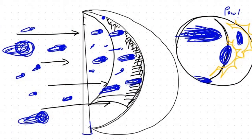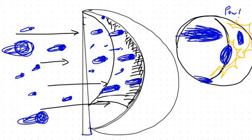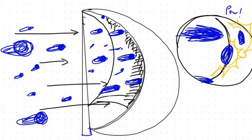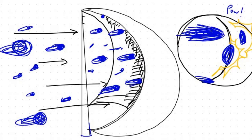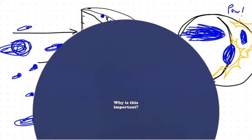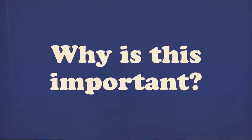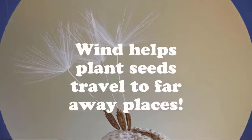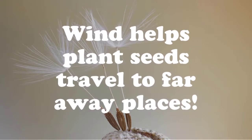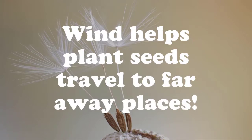If they all hit the sail, then it's possible that if it's strong enough, it can push whatever the sail is attached to forward. So we know wind can push things. So why is this important? With just enough push, wind can help push the seeds to faraway places. This is a process called seed dispersal.